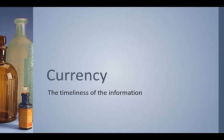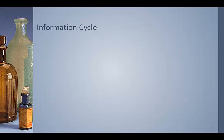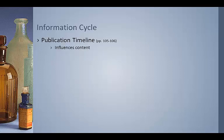To begin: currency. This is really about the timeliness of the information. We'll talk about the information cycle here and then a little bit more in depth later in the semester. When we talk about timeliness, it's really about the publication timeline — and if you look in your text, it's covered on pages 105 and 106. The publication timeline influences the content of the publication as well as defines the uses for it.